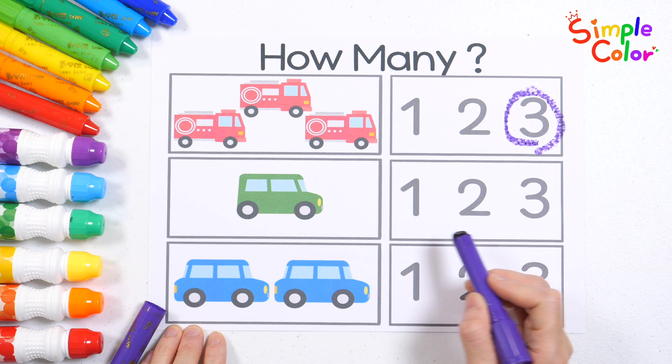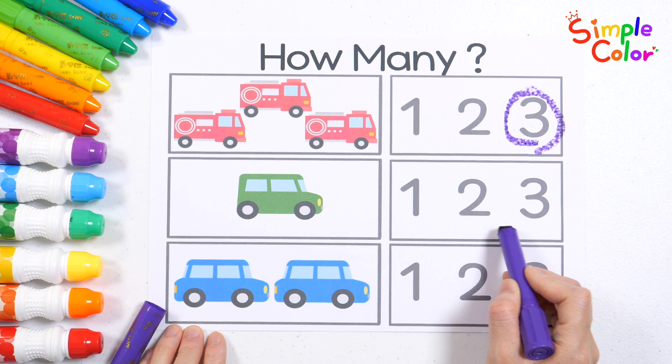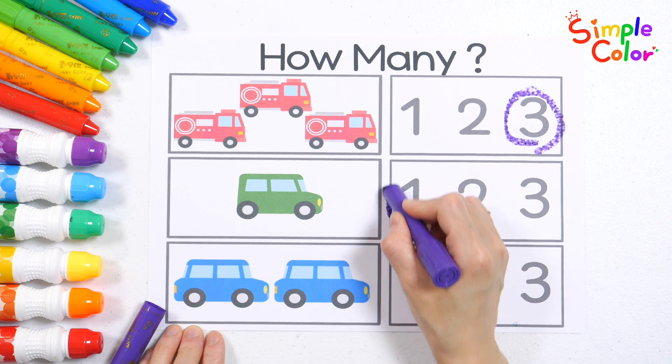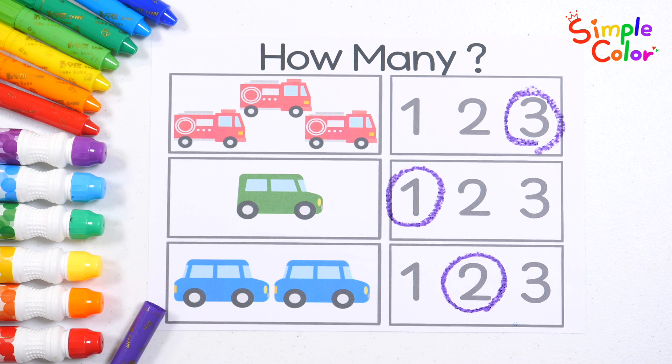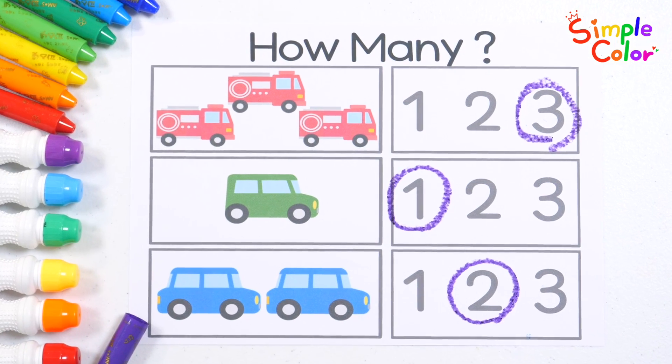One green car. Find the number one. That's right! One. Let's count! One, two. Two blue cars. That's right! Two. Good job!